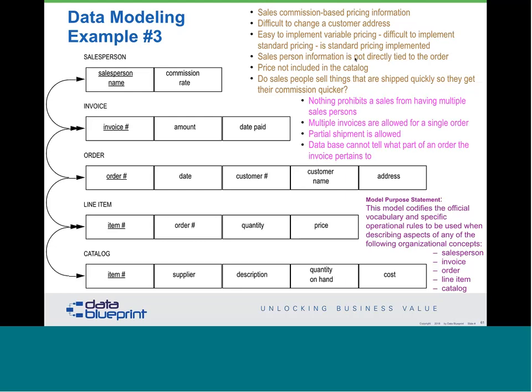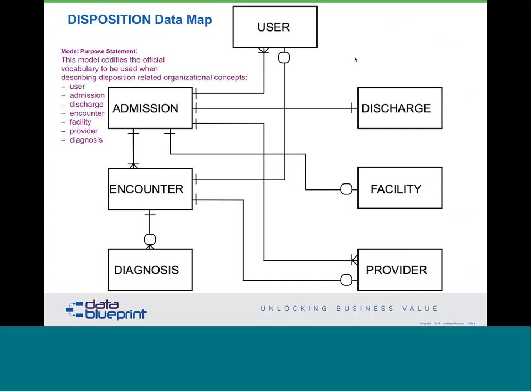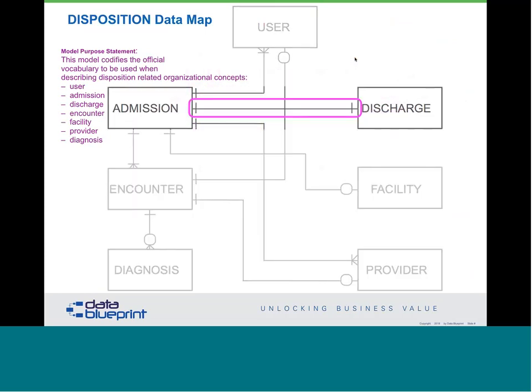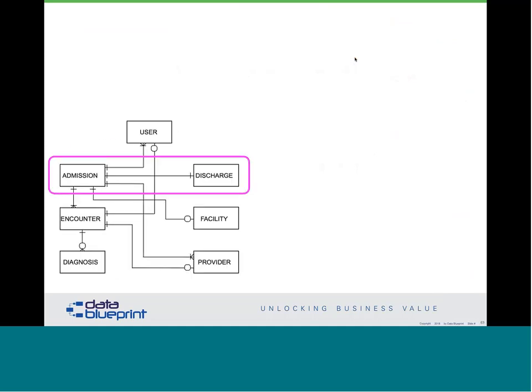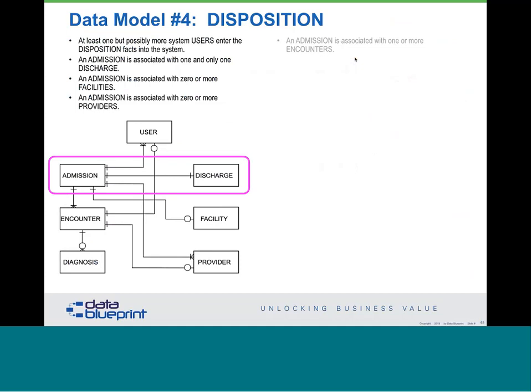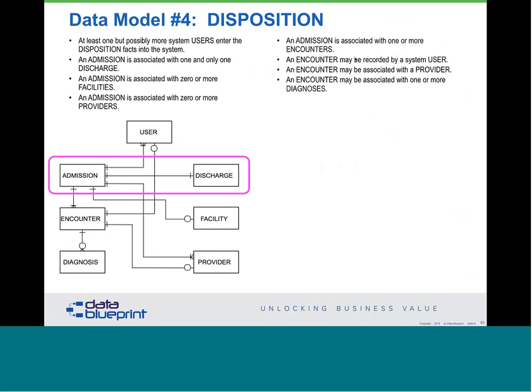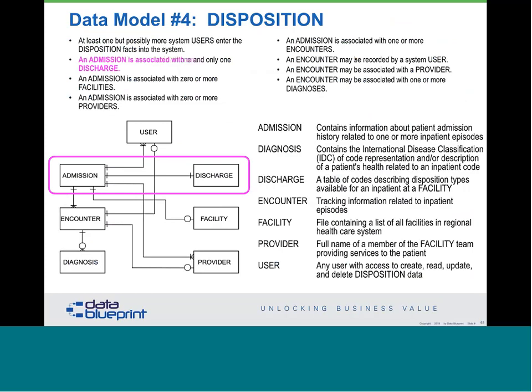Here's another part of the VA system — a model view concerning the disposition of patients. The disposition is related to admission and discharge in a one-to-one relationship. Every admission must have a discharge; every discharge must have an admission. If you don't have them, the database doesn't have the structural integrity we'd like. Looking at the business rules: admission is associated with one and only one discharge. Admission contains information about patient episodes. Discharge is a table of codes having the disposition types available.